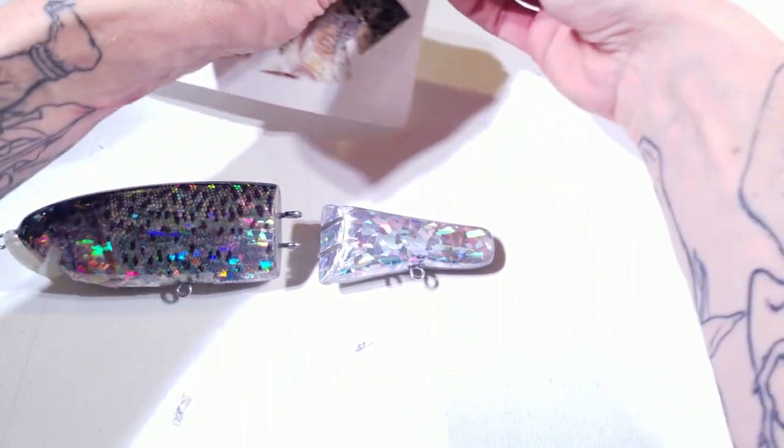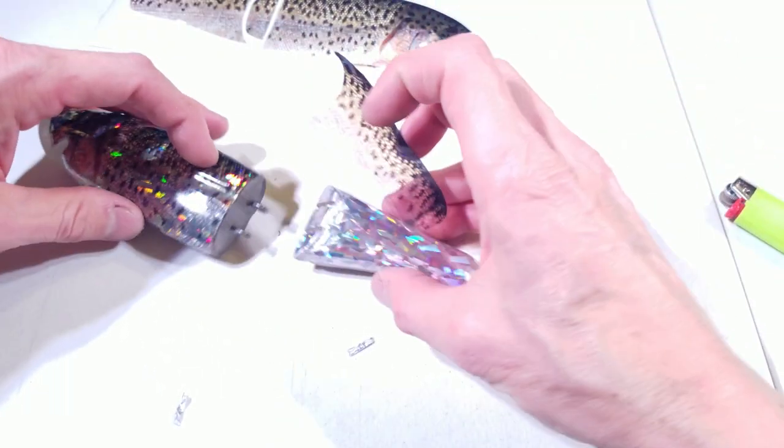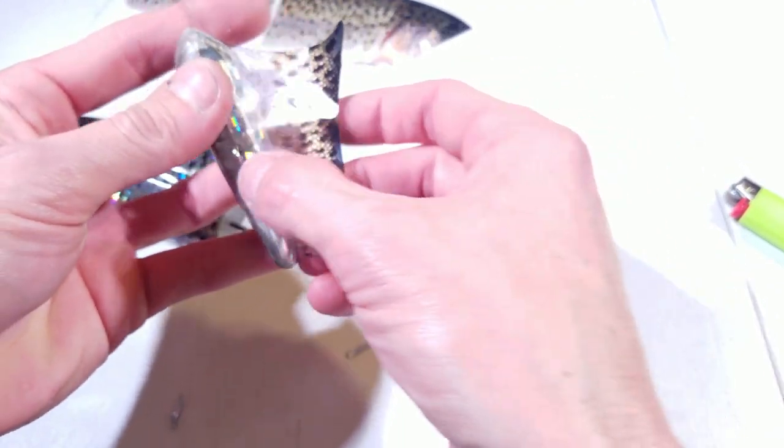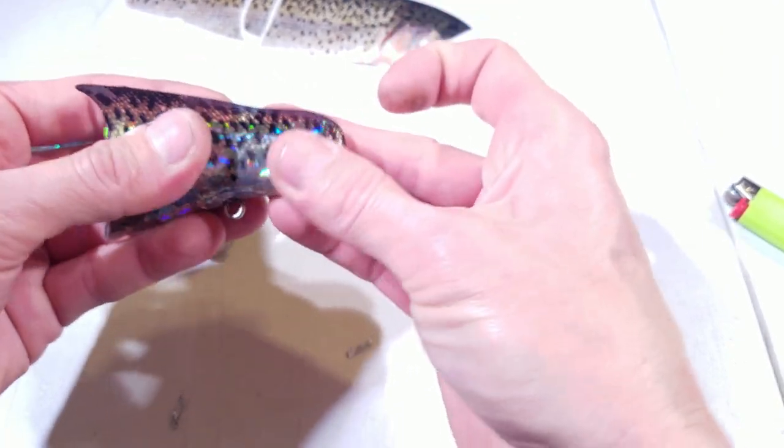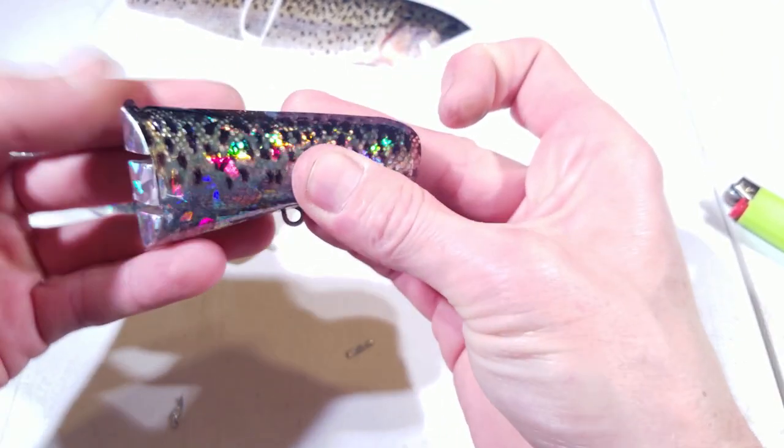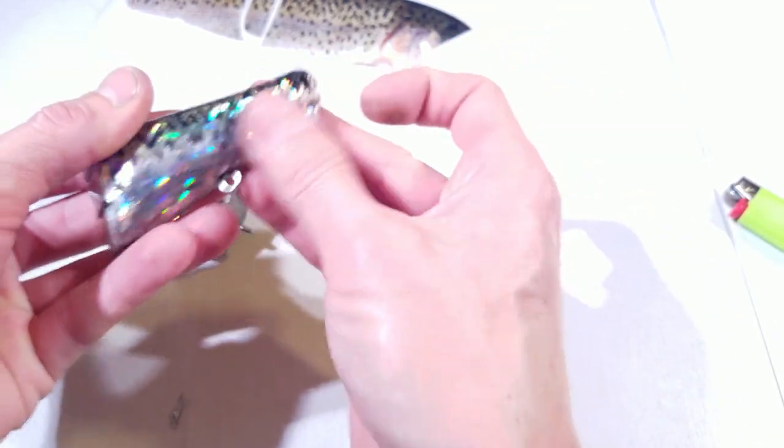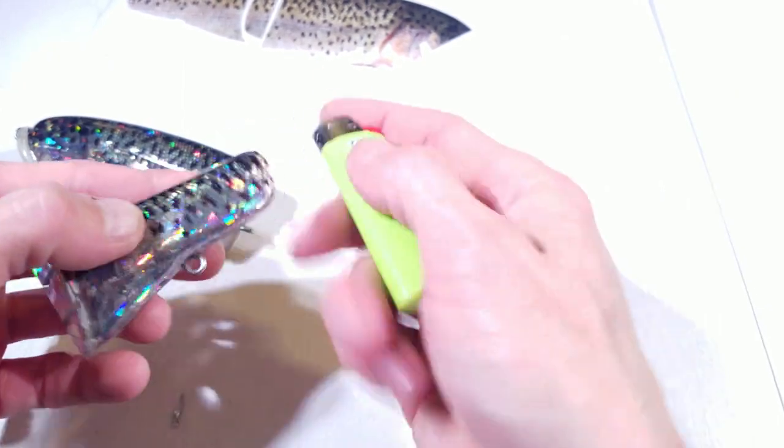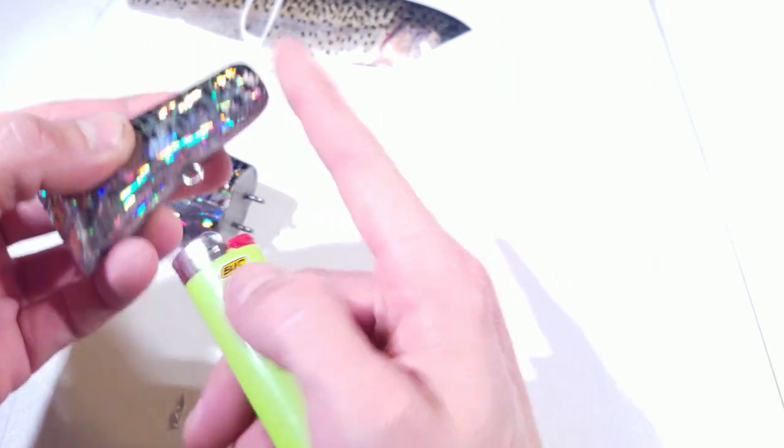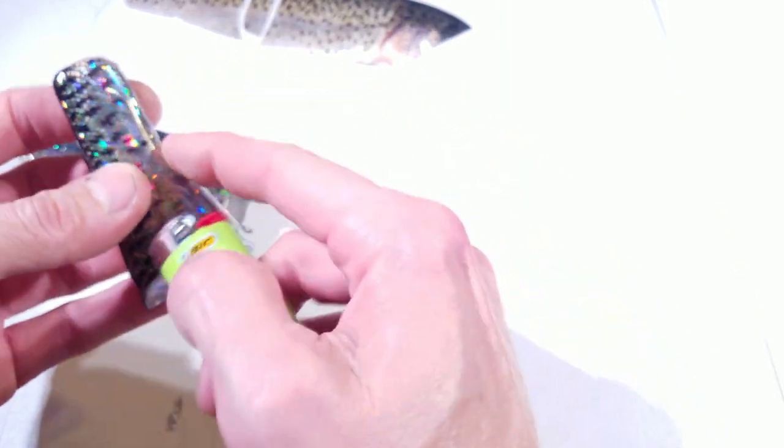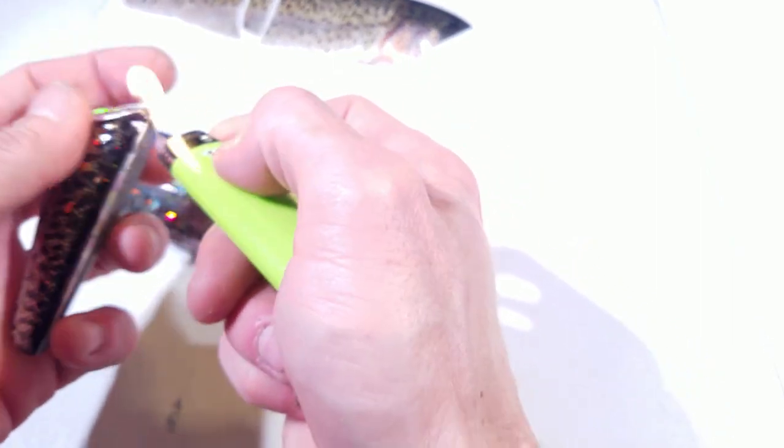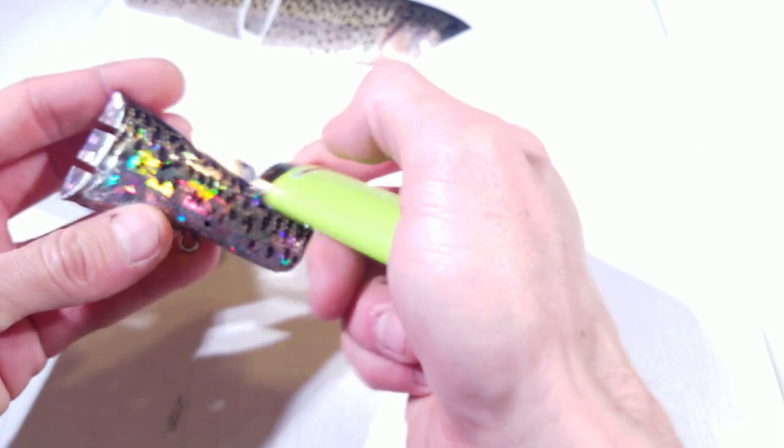Next you're going to take the tail section transparent skin, lay it over the foil you just applied in the same manner, making sure not to get any wrinkles or bubbles. Use the lighter to melt down any creases and conform the material to the shape of the bait. The more lighter you use, the more the wrap is going to secure itself onto the bait and give you that extra strength and security.